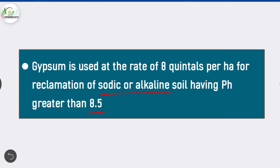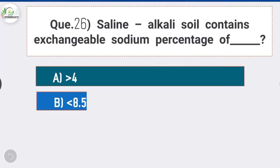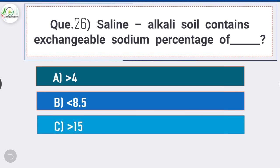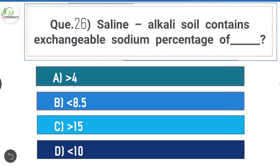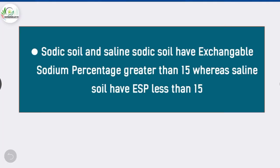Question number 26: Saline alkali soil contains exchangeable sodium percentage of? Answer is option C, greater than 15. Sodic soil and saline sodic soil have exchangeable sodium percentage greater than 15, whereas saline soil has ESP less than 15.